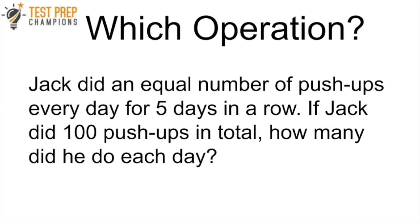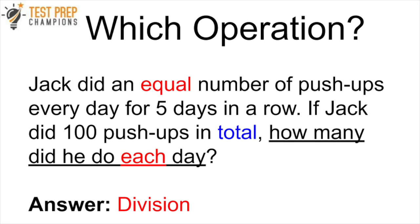Round four: Jack did an equal number of push-ups every day for five days in a row. If Jack did 100 push-ups in total, how many did he do each day? The correct answer is division, and there are two keywords that suggest division: 'equal' and 'each.' Note that the word 'total' can be misleading here — it doesn't mean we need to find a total, so we don't add or multiply. What the question is really asking is how many push-ups he did each day. Division involves taking a larger number and breaking it into equally sized pieces — dividing a whole into equal-sized parts — so division is the right answer.